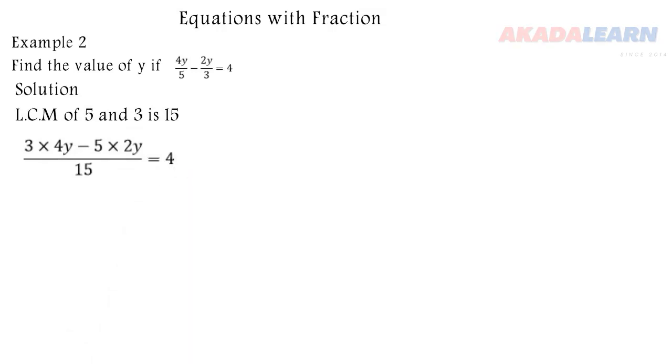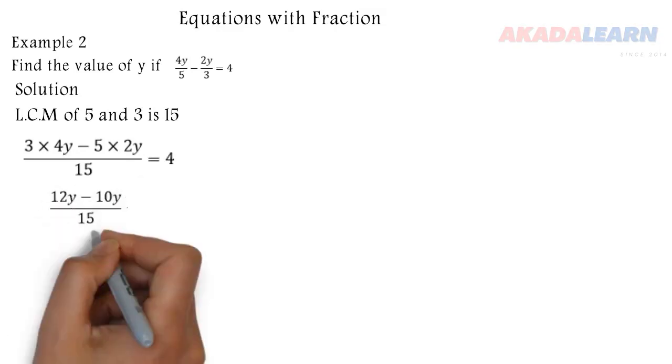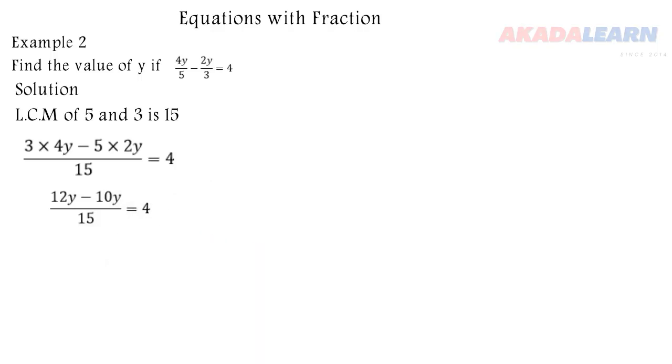3 times 4y is 12y and 5 times 2y is 10y. When we remove 10y from 12y we have 2y.